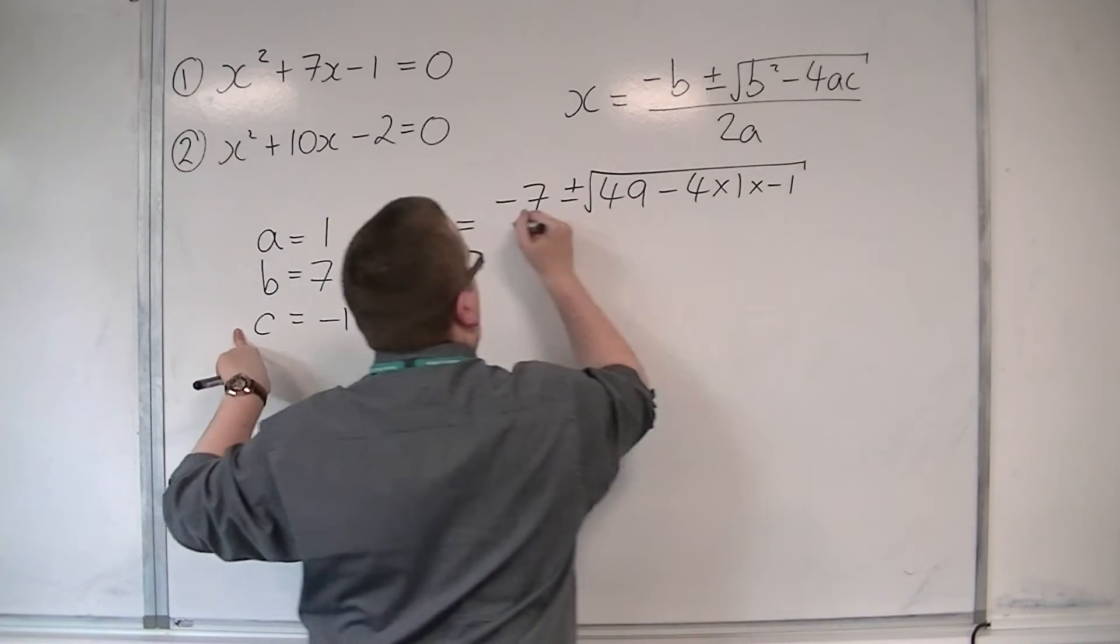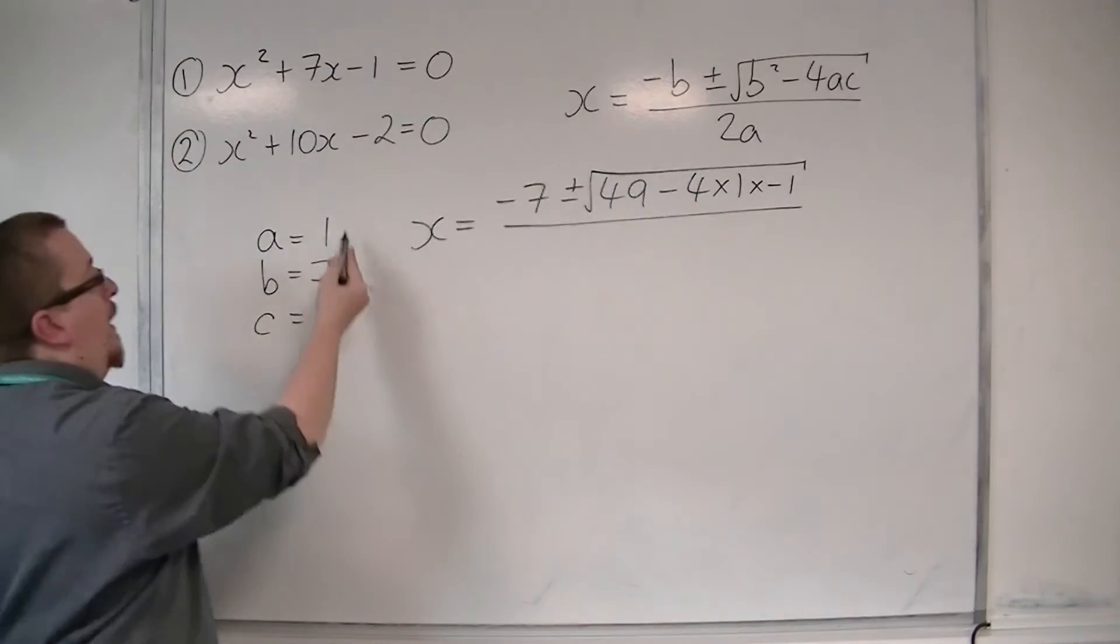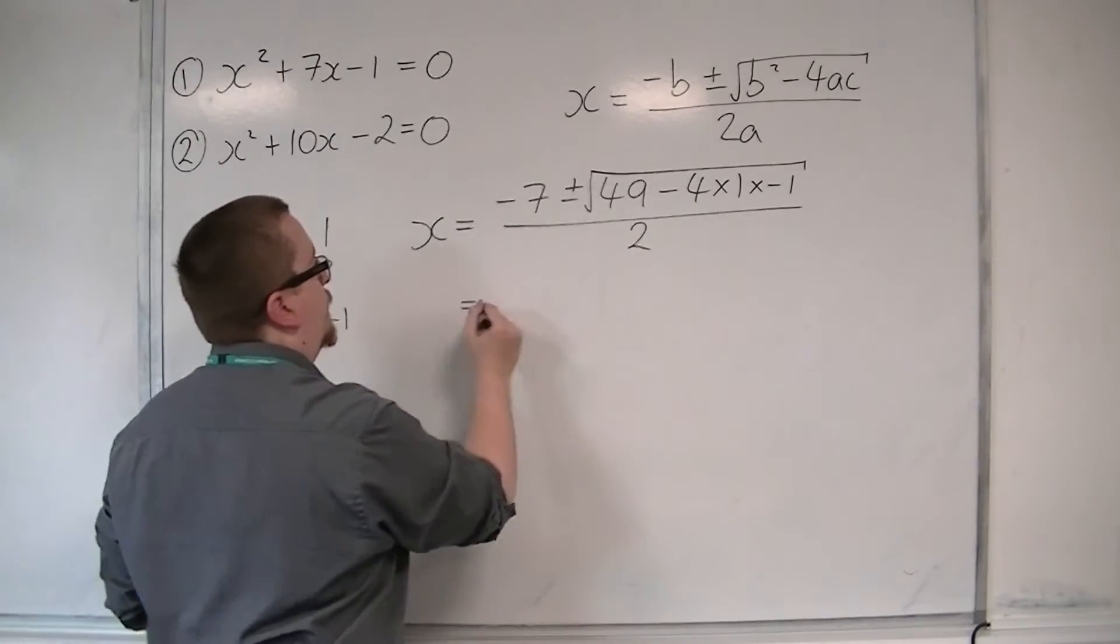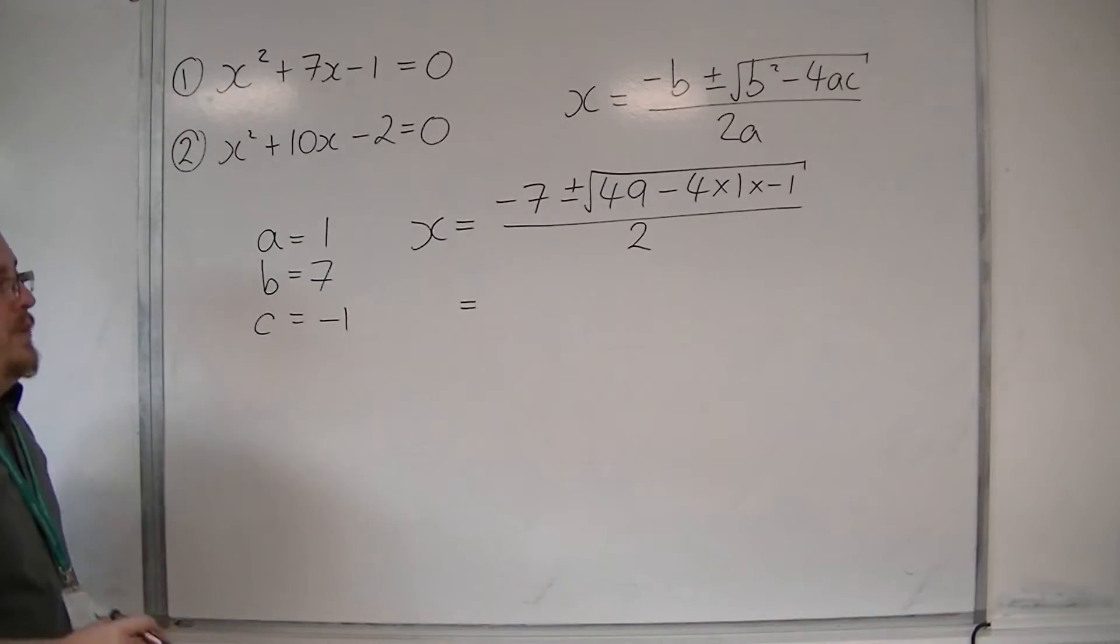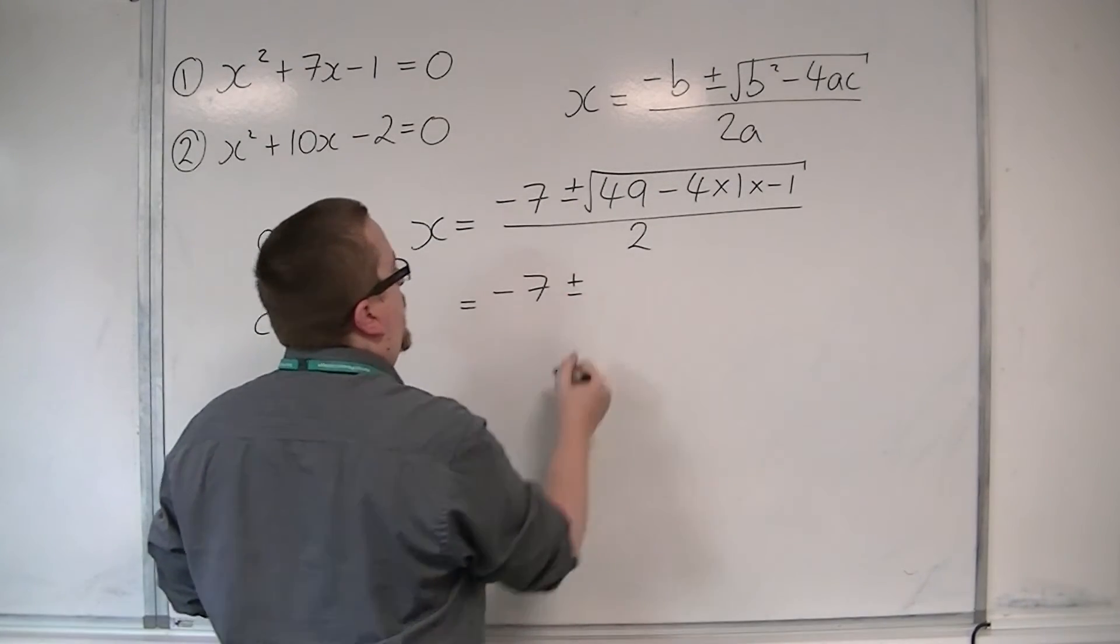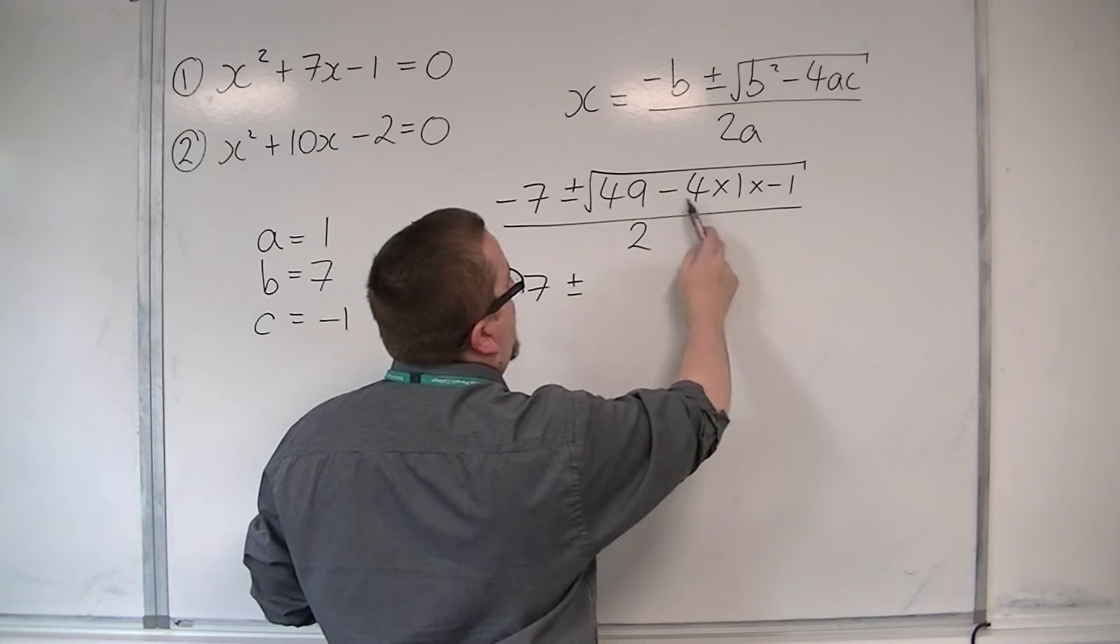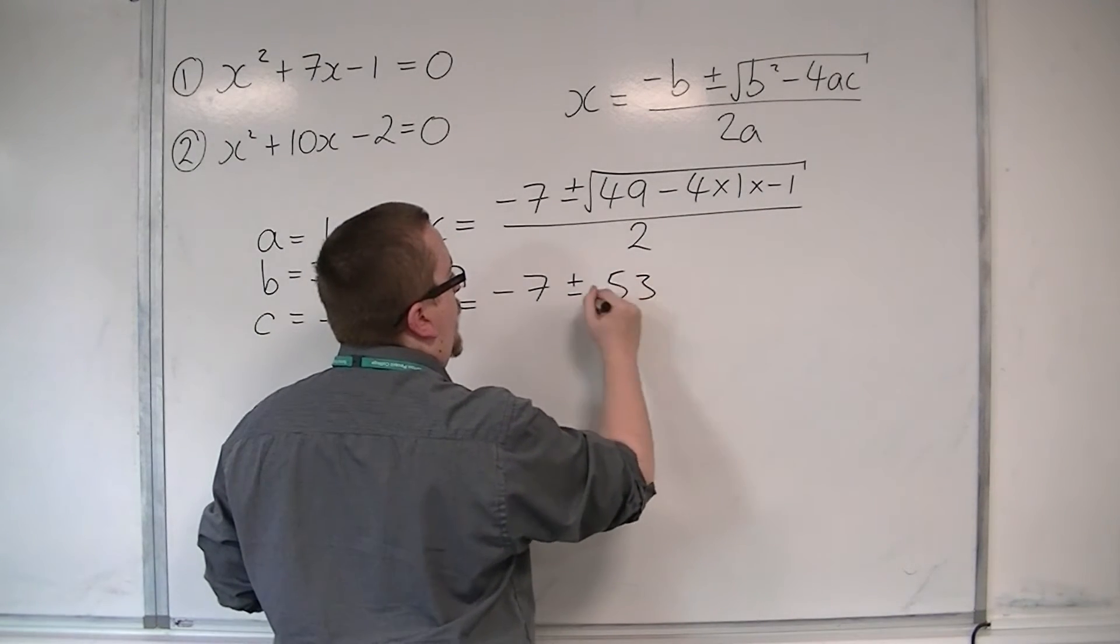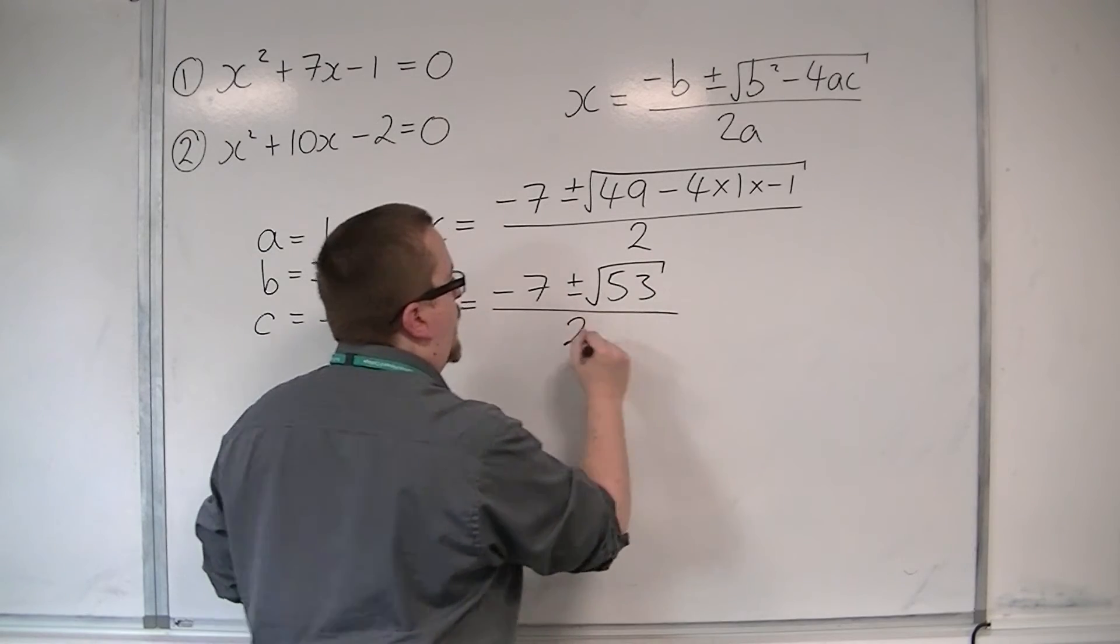Square rooted all over 2a, so 2 lots of a, which is 2. So we want to be able to simplify this down. So we can write that as minus 7, plus or minus, this is 49 plus 4, so 53. So the square root of 53 all over 2.